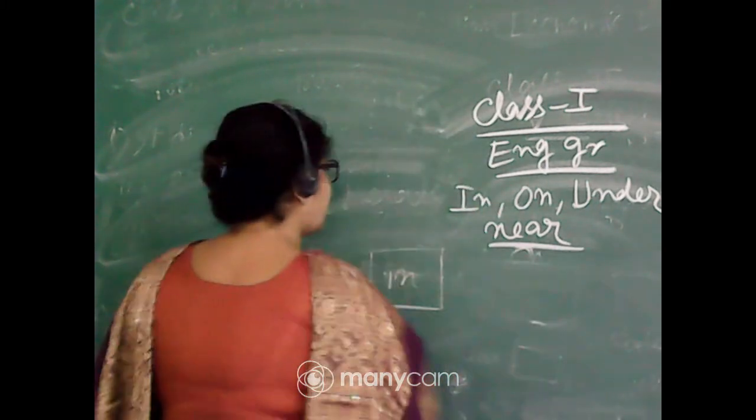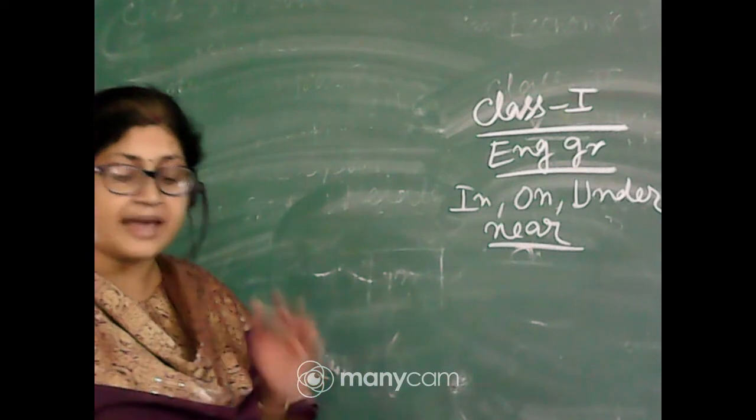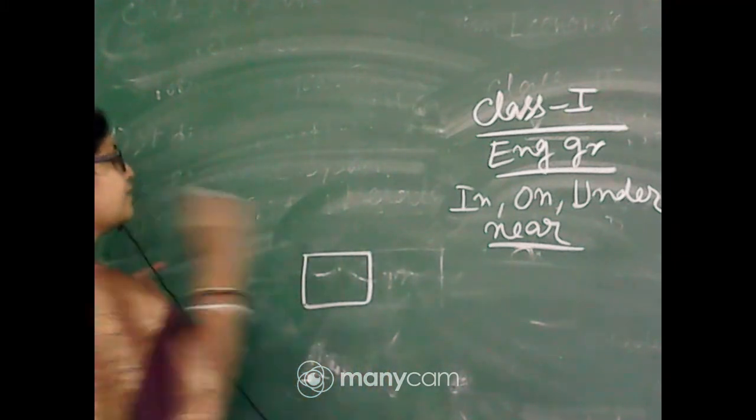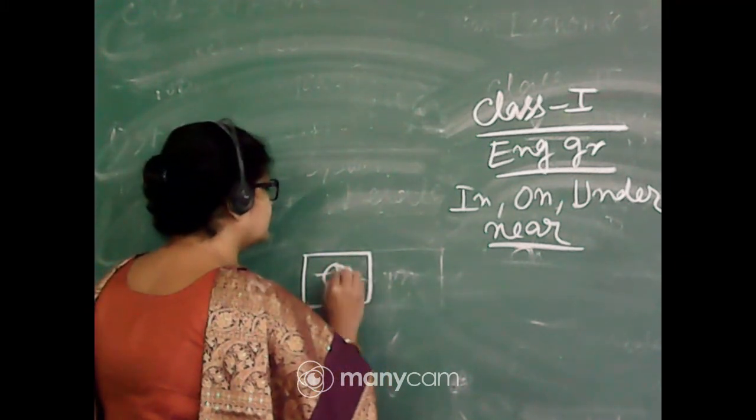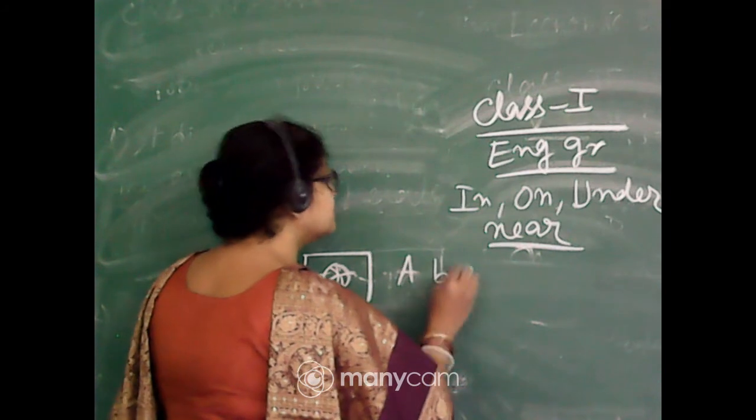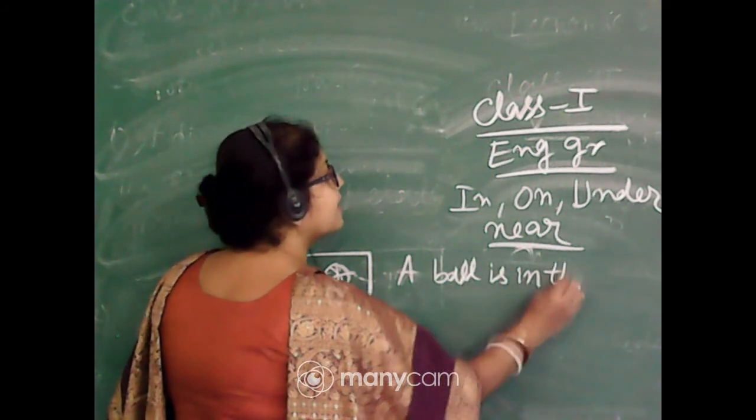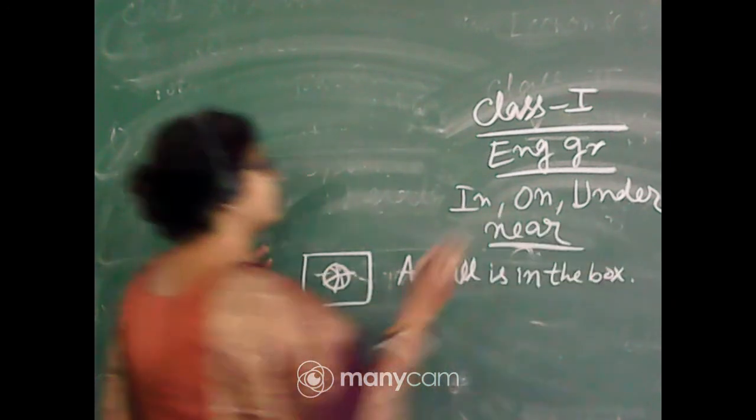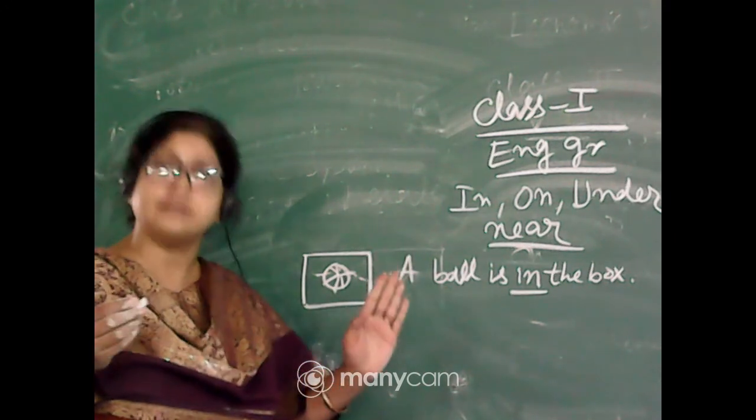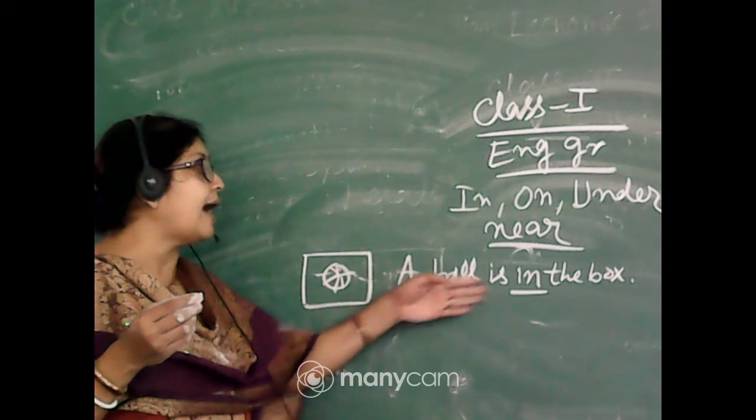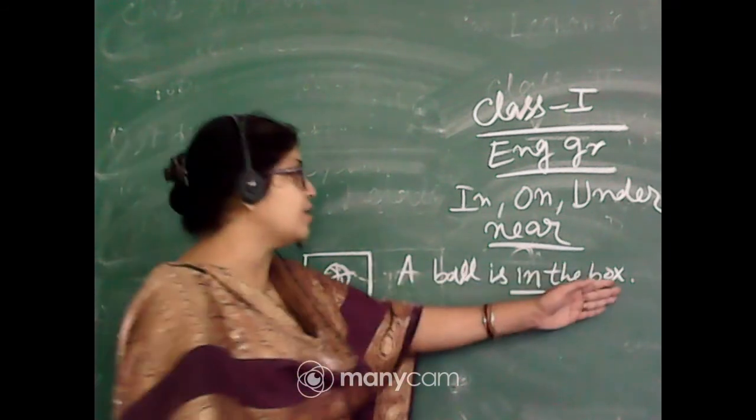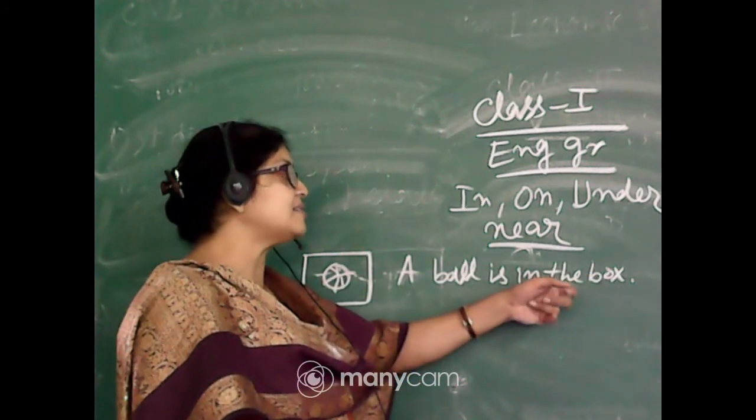So I am giving some example. Just listen. If I am keeping a ball, so I can tell a ball is in the box. So in, where is the ball? The position of the noun is there. I think you have learned the noun, so noun is ball and it is in the box. Please remember this position of the noun, the place before box. Where is it? In the box, before that place.